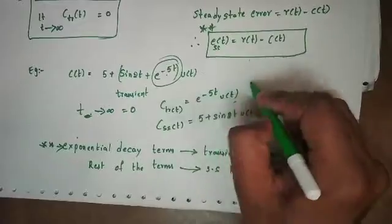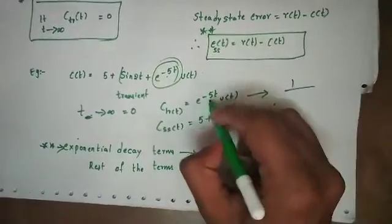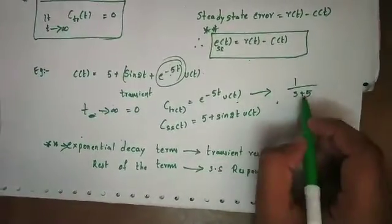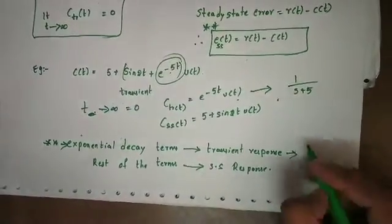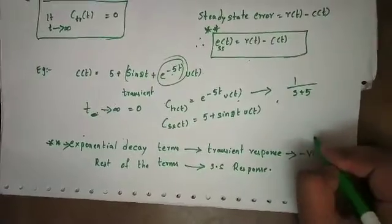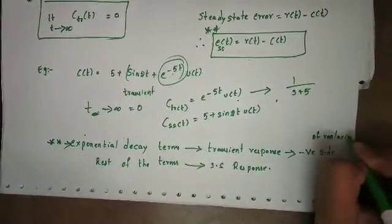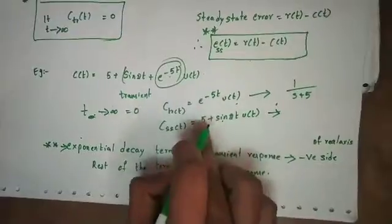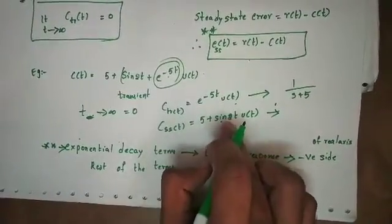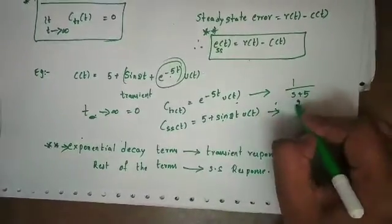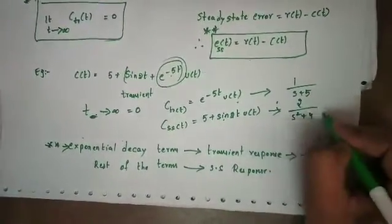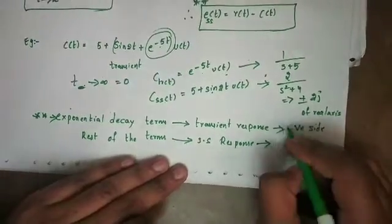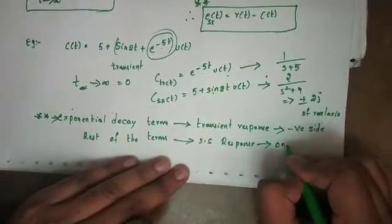Let's see the Laplace transform. What is the Laplace transform? 1 divided by (s + 5). In generalized form: poles are always on the negative side of the real axis. What is the Laplace transform of sin? Omega divided by (s² + ω²) — for example, 2 divided by (s² + 4). Poles are at plus/minus 2j — on the imaginary axis. Steady state response poles are on the imaginary axis.